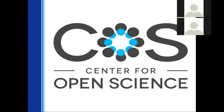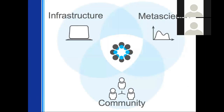We do that in a couple of different ways. Internally, we're organized into three teams. We have a meta-science team that runs replication studies to try and identify key issues in reproducibility and best practices across multiple fields. We have a community team — I'm on the community team. We run events like this and reach out to individual researchers and teams to try and spread some of those best practices around.